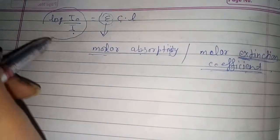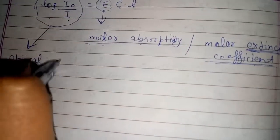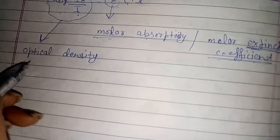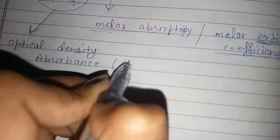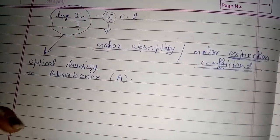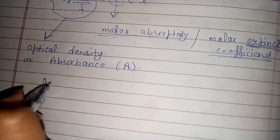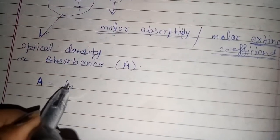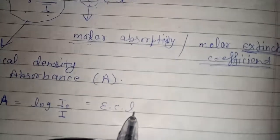The term log(I₀/I) is called optical density — it is a measure of absorption of radiation by a sample. Therefore, Beer-Lambert Law may also be expressed mathematically as: A equals log(I₀/I) equals epsilon dot C dot L.